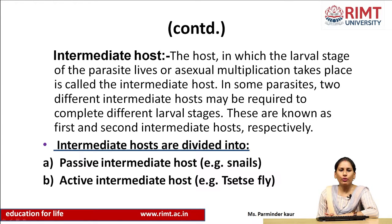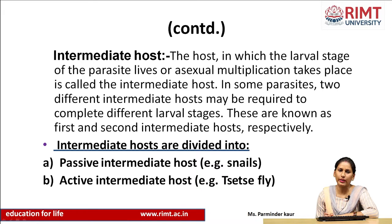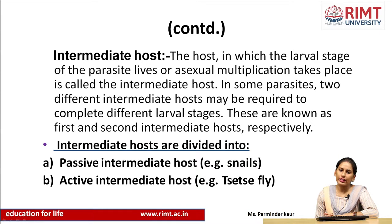After that, we have the intermediate host — the host in which the larval stage of the parasite lives or asexual multiplication takes place. The parasite has different stages like cysts, cercariae, or eggs. In some parasites, two different intermediate hosts may be required to complete the different larval stages. There can be the need for two intermediate hosts — for example, a passive intermediate host such as snails, generally found in water sources, and an active intermediate host such as the tsetse fly.